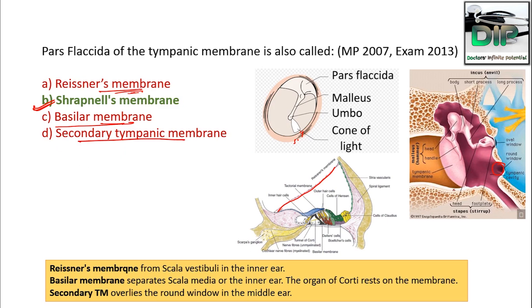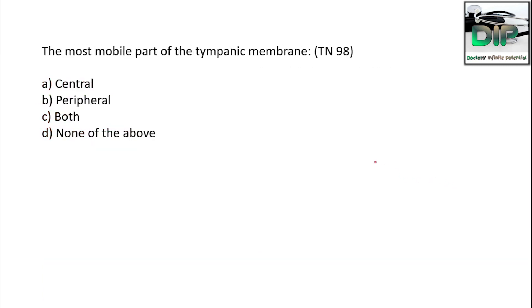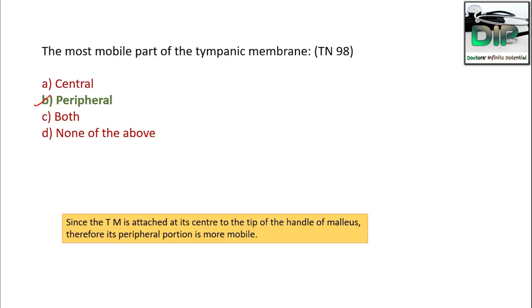Next question: The most mobile part of the tympanic membrane is — options: A) Central, B) Peripheral, C) Both, D) None. The correct answer is peripheral. The peripheral portion is the most mobile because at the center, the tip of the handle of malleus is attached.